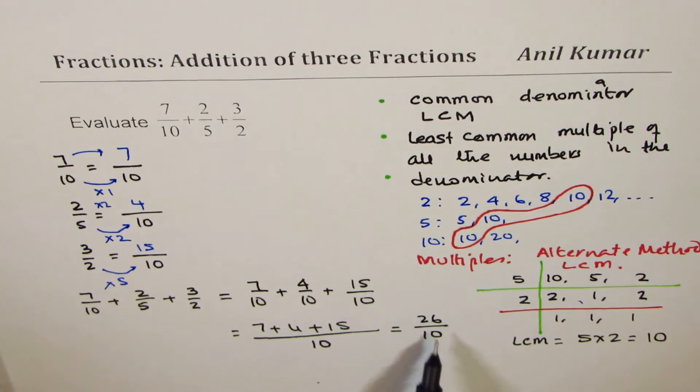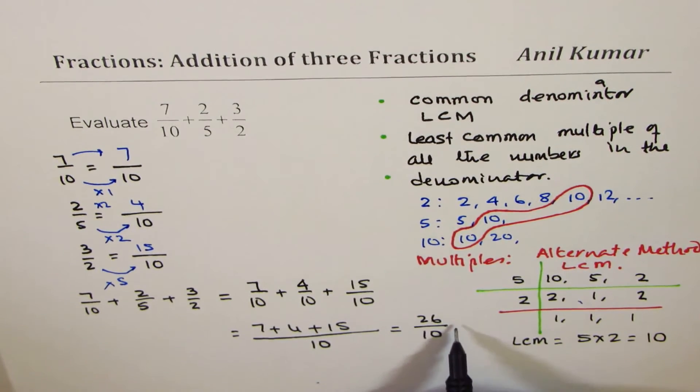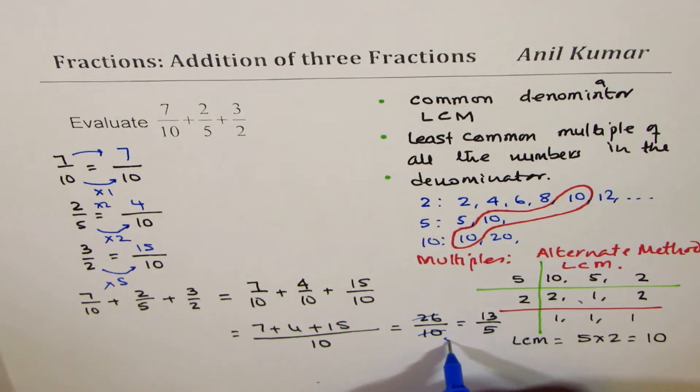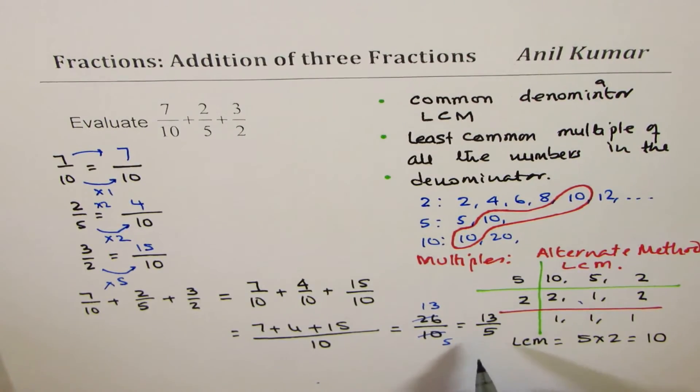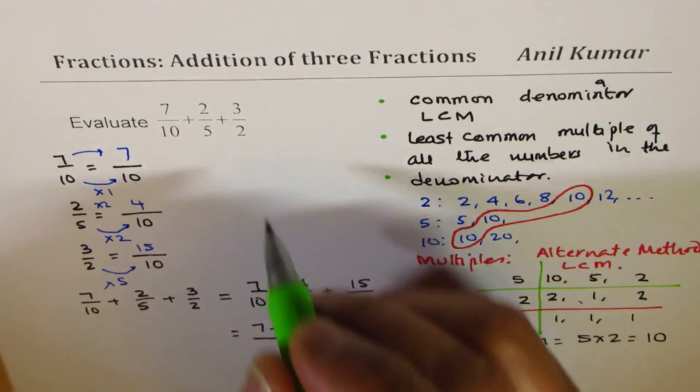Now 26 over 10 which we get here could be simplified. You could divide both by 2. Once you do that you get 13 over 5. And this is still improper fraction, so we divide both by 2, we get 5 here and 13 there.